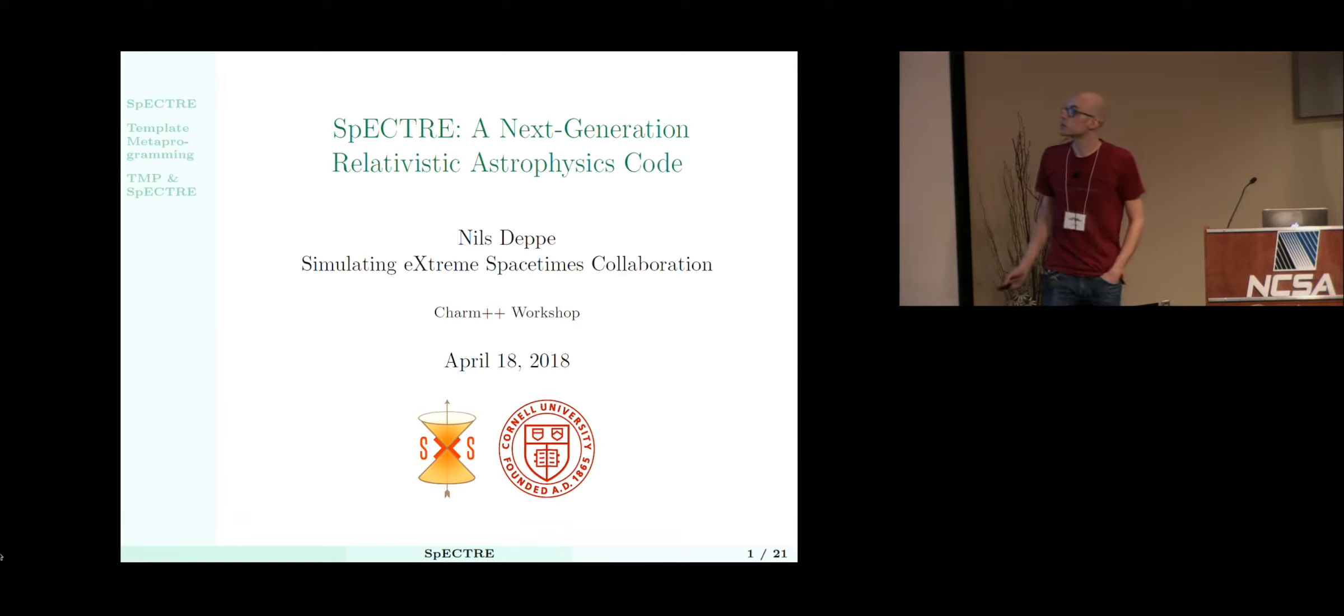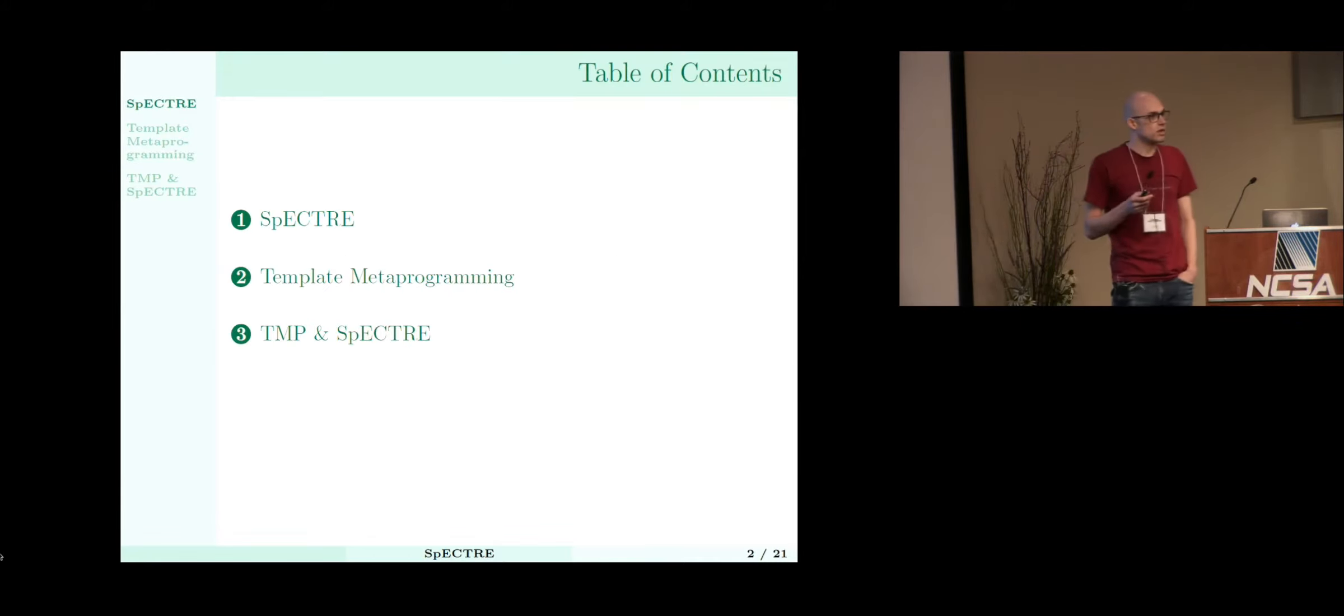What we're working on is basically we need a next generation code. Our current code works well for binary black holes, but it only scales to about 100 to 1,000 cores. That's just not going to get us the kind of turnaround time we need for when LIGO detects gravitational waves more frequently. Please interrupt me because first I'll give an overview of what we've been able to do so far. Then I'm going to jump to template metaprogramming because I think this is the future and I want to advocate for it, and then I'll explain how I'm using template metaprogramming in SPECTRE.